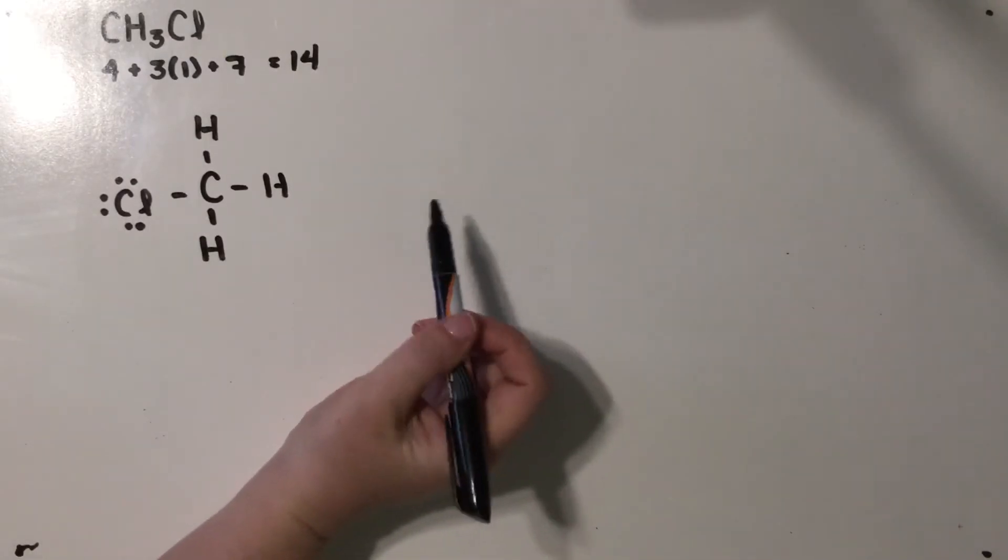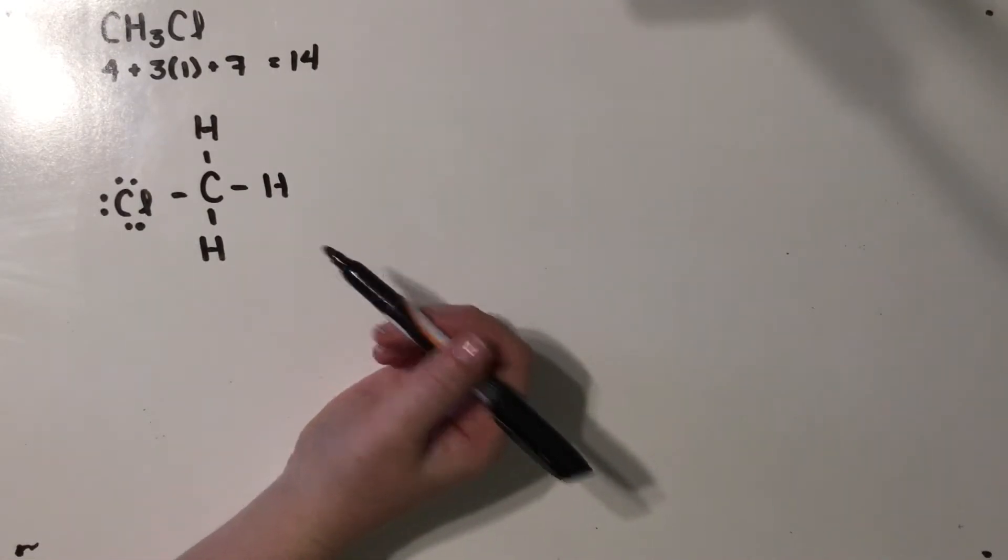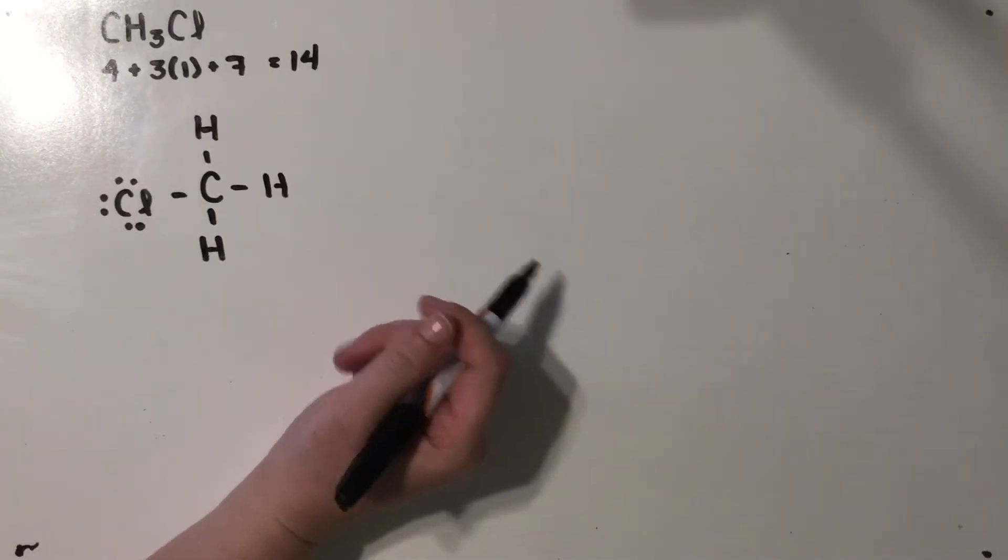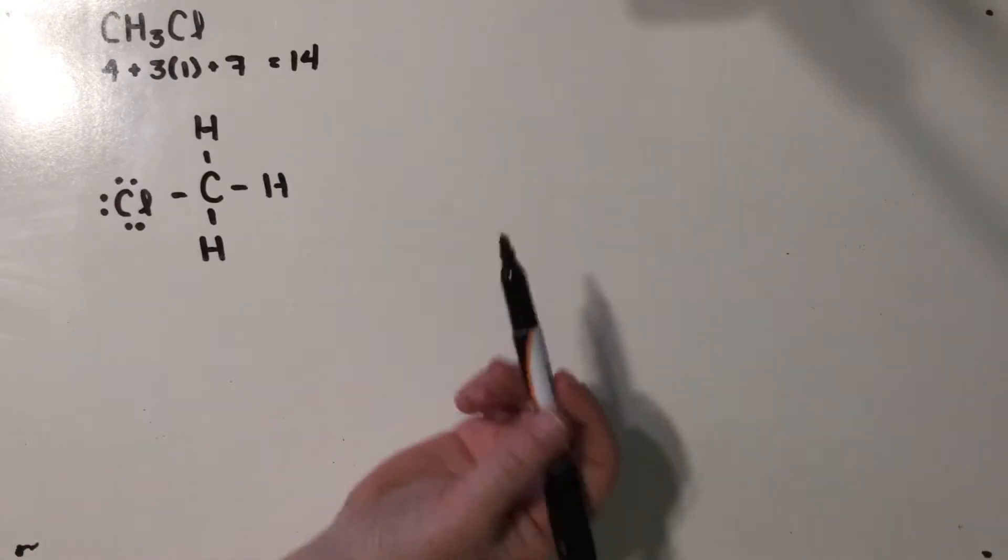Honestly, without giving carbon an expanded octet, it's probably the only Lewis structure we can make. And since carbon is in the second period, the first P row, it's not able to make an expanded octet because it doesn't have any D electrons to work with anyway.